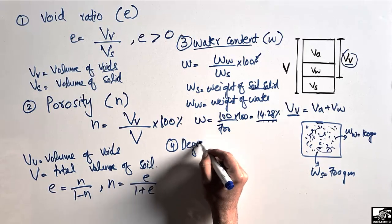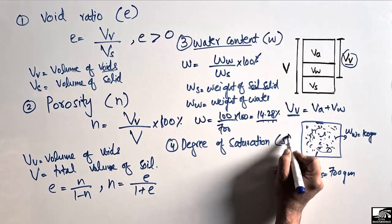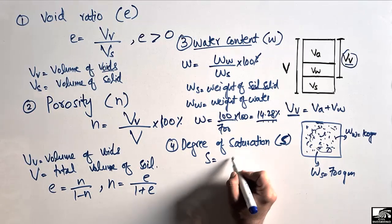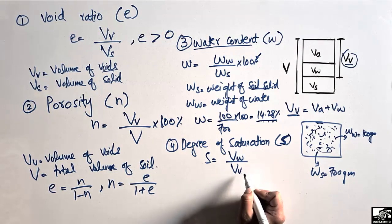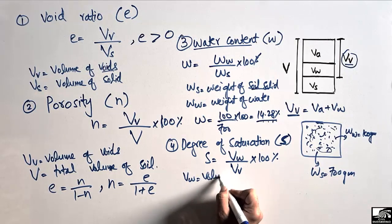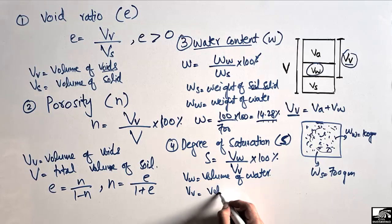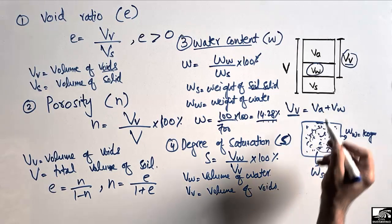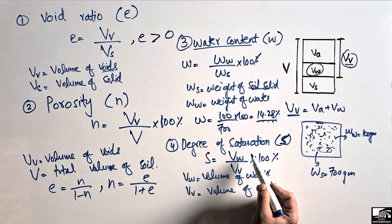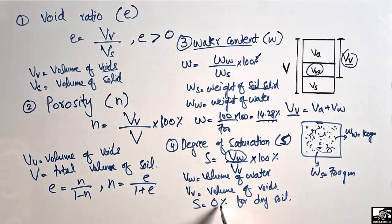The fourth topic is the degree of saturation, which is also an important concept in soil mechanics. The degree of saturation is represented by capital S, and it is the ratio of the volume of water (Vw) divided by the volume of voids (Vv), multiplied by 100 percent. Voids include both air and water. It should be kept in mind that the degree of saturation is zero percent for dry soil, because there is no water, and the degree of saturation is 100 percent for fully saturated soil.